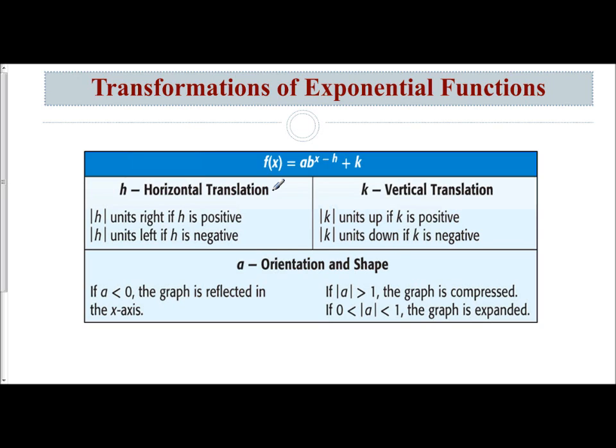h is horizontal translation, k is vertical translation. a is orientation and shape. If you have an h value that is positive, which means you're going to have b to the x minus h, remember when it deals with h, it's the opposite of what you see because the formula has a minus sign in it.